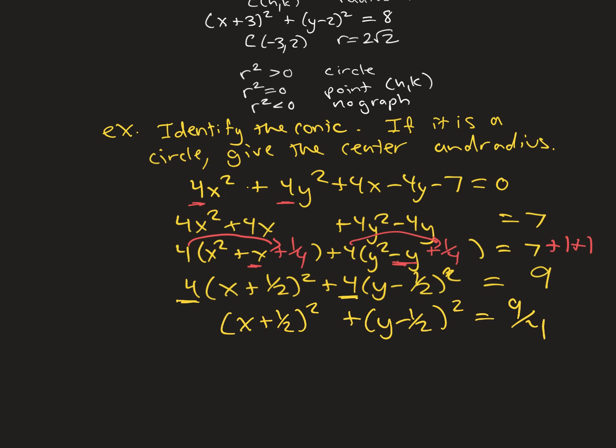Now, in this form, the right side is positive. So, I did have a circle. The center is (-1/2, 1/2). And the radius is the square root of the right side, 3/2. That is circles.